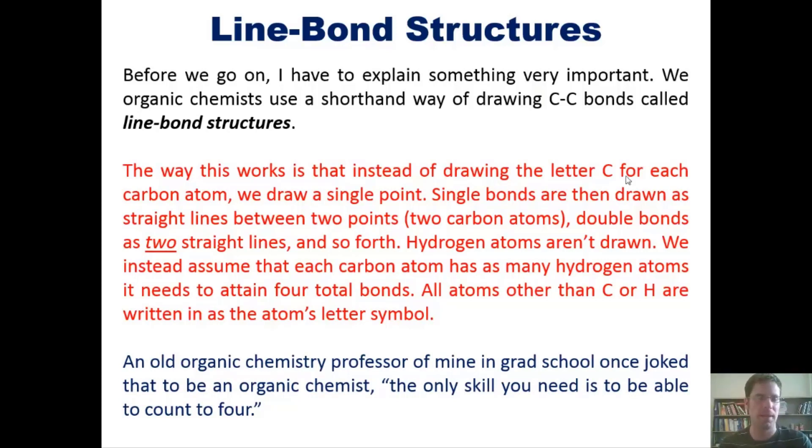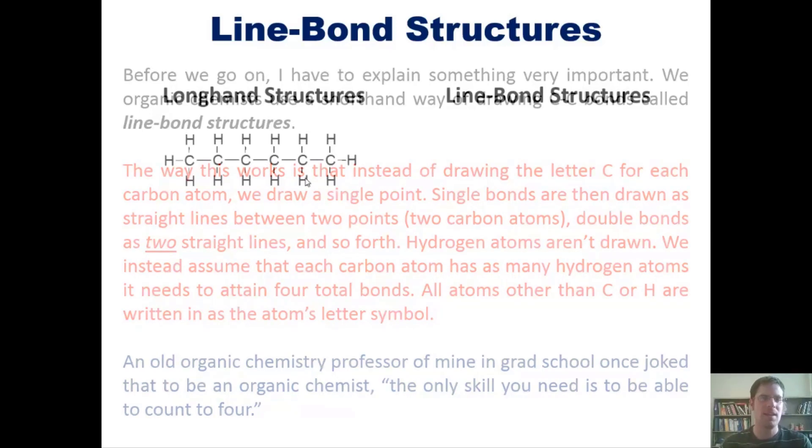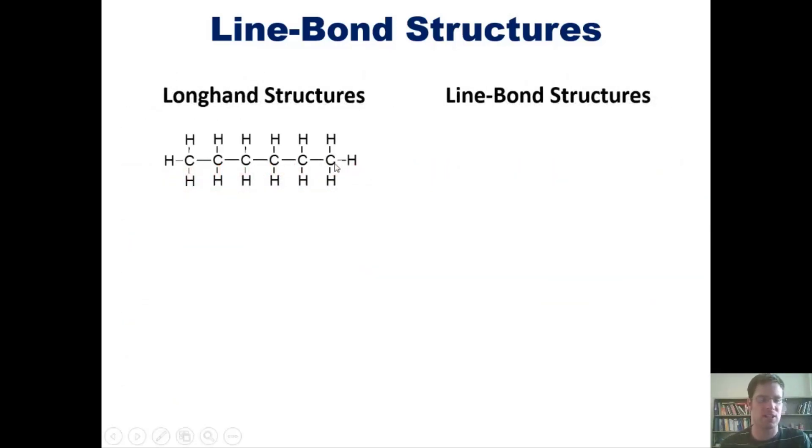Let me show you this further. This molecule, called hexane, if I draw it all out in longhand structure, I've got to draw all these bonds between carbons and hydrogens - it takes forever. The line bond structure in contrast looks like this. Keep in mind each of these points is a carbon atom. I don't draw hydrogen atoms; I just assume they're there. I've got one, two, three, four, five, six - six carbon atoms. That's hexane.